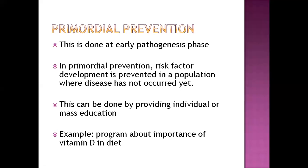First is primordial prevention. This is done at the early pathogenesis phase. In primordial prevention, risk factor development is prevented in a population where the disease has not occurred yet. So primordial prevention is performed in a population where even the risk factor of the disease has not started. This can be done by providing education to people to be saved from that risk factor.